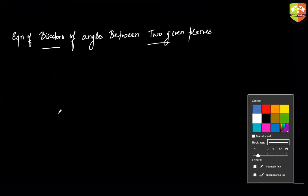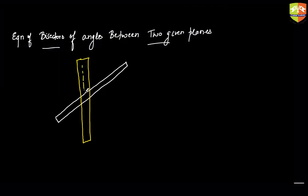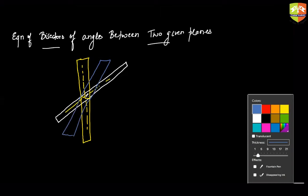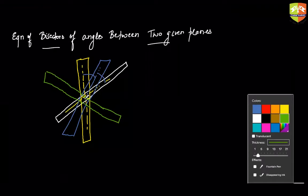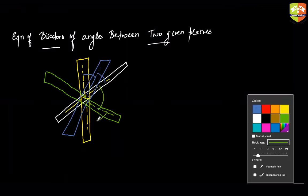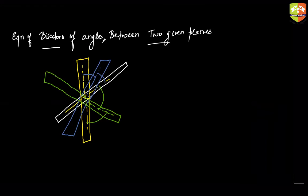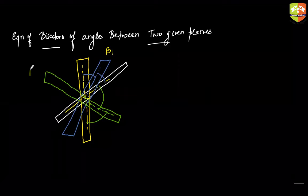Between two planes, let's say I am drawing these two thin planes. The angle that is created — there are two types of angles, one is the acute angle and another is the obtuse angle. So through these two planes, passing through the line of intersection, I can make a bisector plane which bisects the angle. Or I could also have a plane — a green plane like this — that bisects the external angle. So these two are your bisector planes; let me call them B1 and B2.